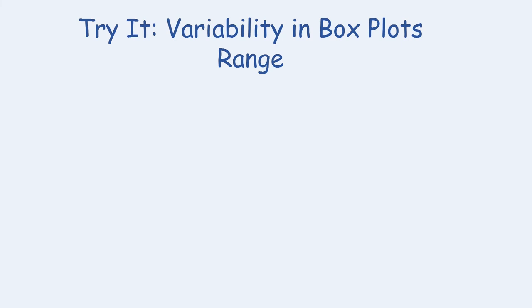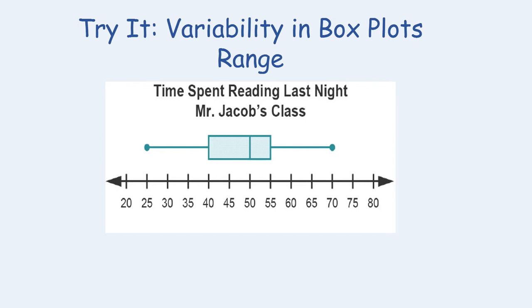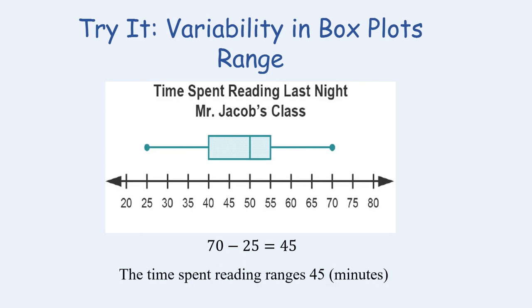Now let's find the range in a box plot. Recalling the think about it image — a box plot about time spent reading last night in Mr. Jacobs' class — to find the range, find the largest and smallest values. The largest value is at the right dot indicating 70, and the smallest is at the left dot indicating 25. Subtracting: 70 minus 25 equals 45. Therefore the time spent reading ranges 45 minutes. It makes more sense as minutes, since 45 hours in a night is impossible.